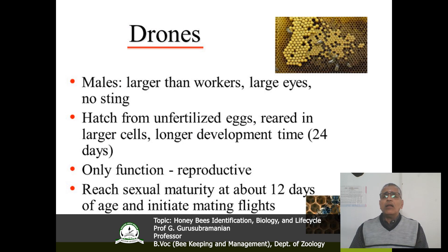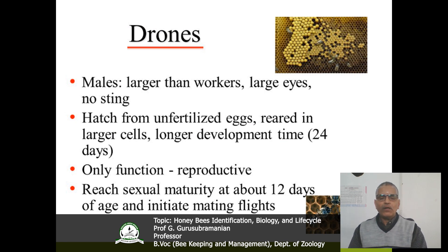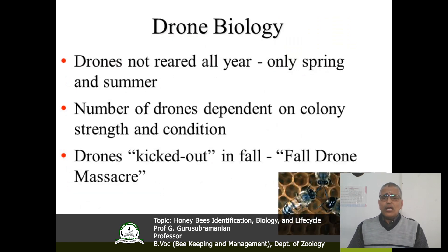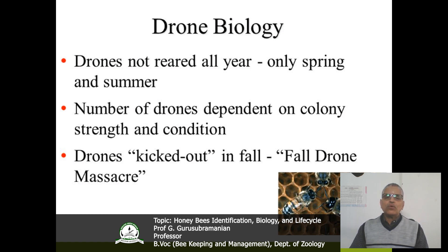Coming to the male or drones: normally they are larger than workers, with large eyes and no sting. They come from unfertilized eggs, and their developmental time is 24 days. Their function is only reproduction and they reach sexual maturity at day 12. Drones are not reared all year — only during spring and summer. The number of drones depends on colony strength and conditions. Normally drones are kicked out from the beehive during the fall season.